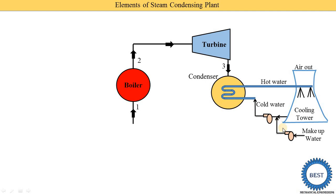This way, the cold water is continuously circulated in the cooling towers and in the condenser. So to summarize: the first component is the condenser, the second component is the cooling tower, the third component is the make-up water, and the fourth component is the cold water pump.